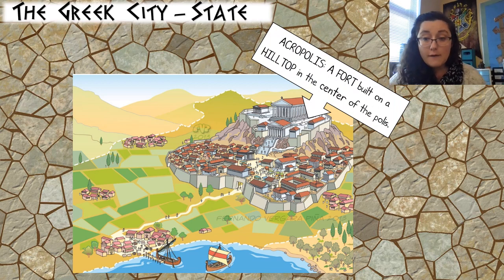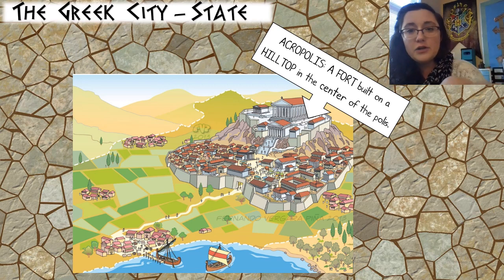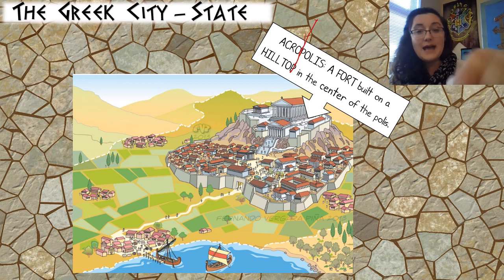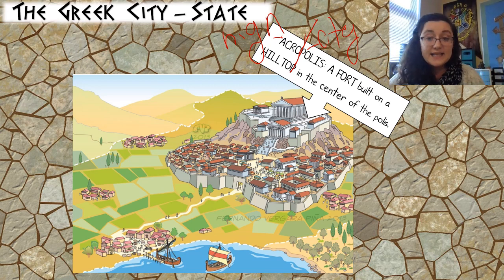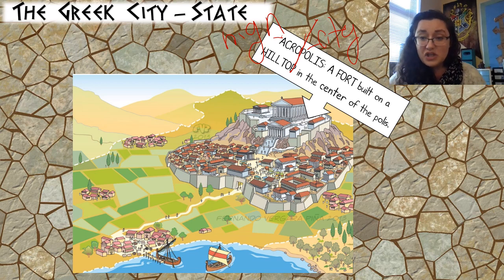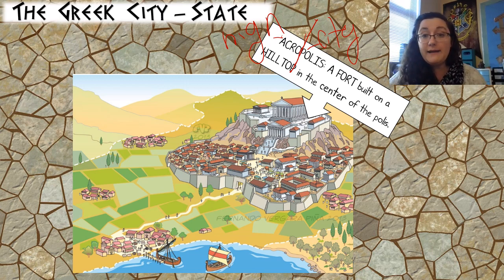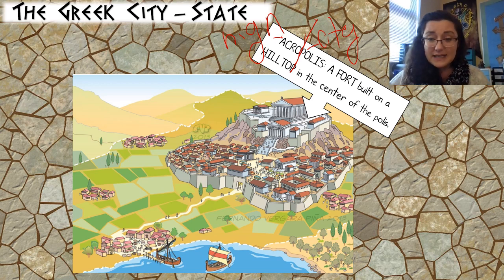There are different parts of the polis. The most famous is the acropolis. Divide the word into two parts: 'acro' means high, and 'polis' means city. So the acropolis is the highest part of the city — a fort built on the highest ground, usually a hilltop in the center of the polis. This is where you would go to spot invaders, and often there were religious temples at the top. It's a safe place where you can see for long distances.